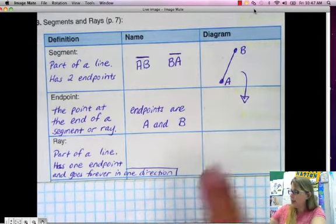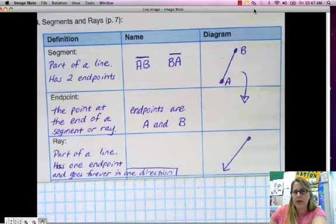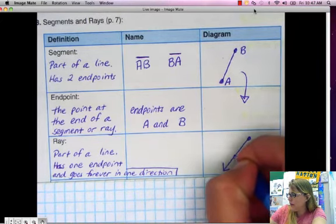Now a ray is part of a line. It's actually a lot of people think of it as half of a line because it starts at an endpoint and then it goes forever and ever and ever just in one direction and so we have just one arrow. Okay so let's name this X and Y.